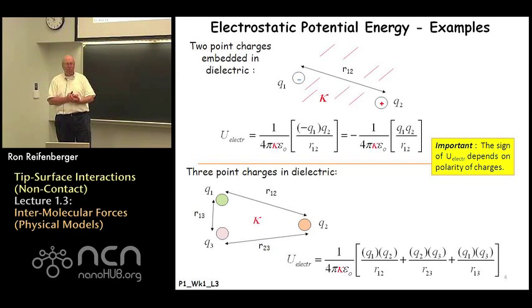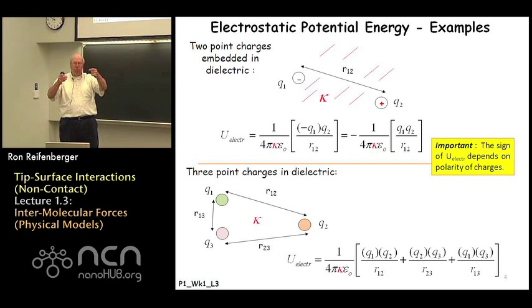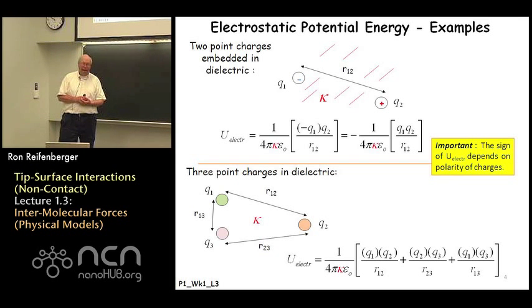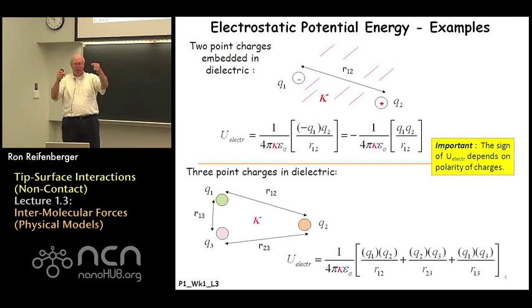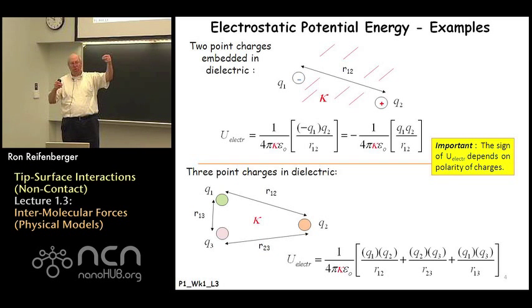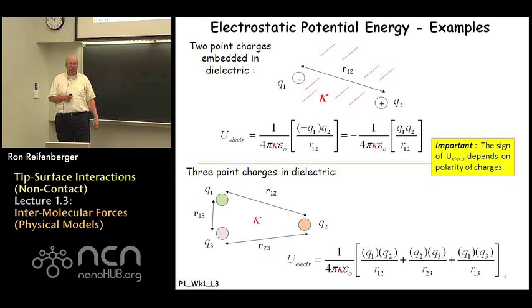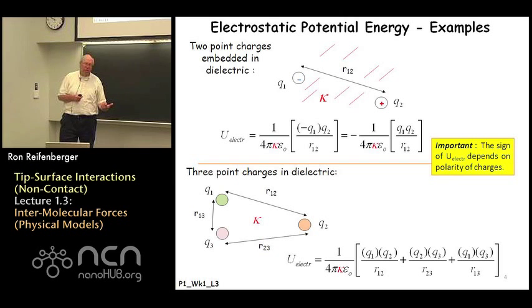Just a couple of real simple examples. The first example illustrates what happens if you embed two point charges — these could be like ions, such as lithium and chlorine — in a material that has a dielectric constant kappa. The electrostatic potential energy of these two ions depends on the separation distance between them and varies as one over the separation distance. You can take the derivative of that electrostatic potential energy with respect to the separation variable, multiply by minus one, and you'll get the net force of interaction between these two ions in this dielectric medium.